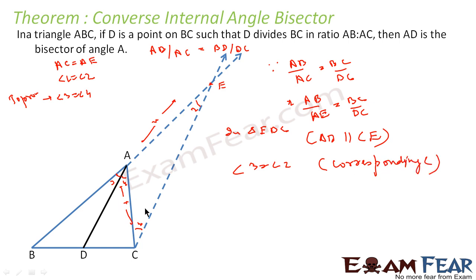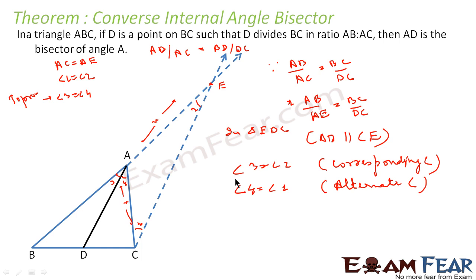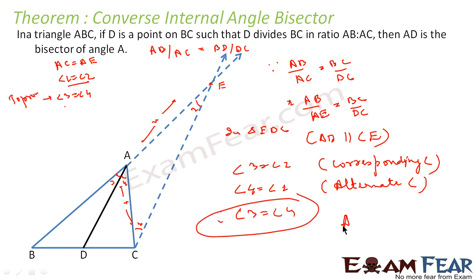Also, angle 4 is equal to angle 1 — by alternate angles, because AD is parallel to CE. Now, angle 3 equals angle 2 and angle 4 equals angle 1. Since angle 1 is equal to angle 2 — given — we can say angle 3 is equal to angle 4. Therefore angle 3 is equal to angle 4, and that is what we were supposed to prove. Since angle 3 equals angle 4, AD is the angle bisector of angle A, that is angle BAC.